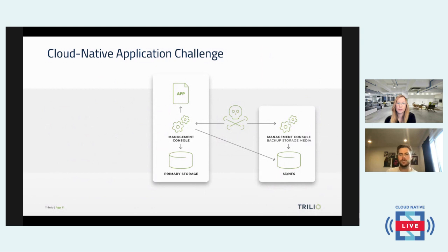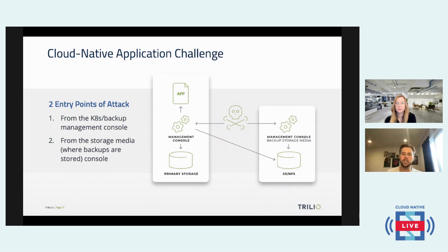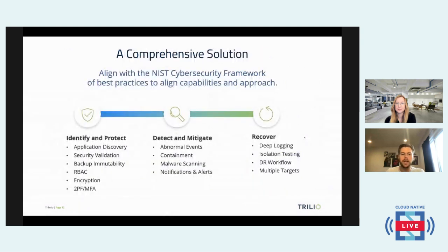Getting deeper into the cloud-native challenge of ransomware and security: when looking at edge-to-core architectures, you have two different entry points of attack. First would be the Kubernetes management console itself — you need security software to identify and protect against cybersecurity attacks. Second would be the storage media — that target or third-party external storage, whether it be S3 or NFS, where you have backups stored in case a ransomware attack happens. You want to make sure those backups are secured, safe, and can be properly restored.